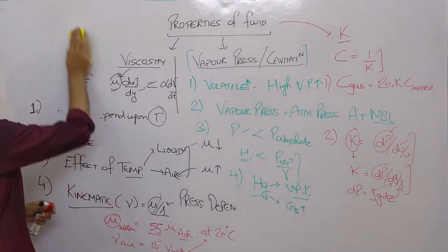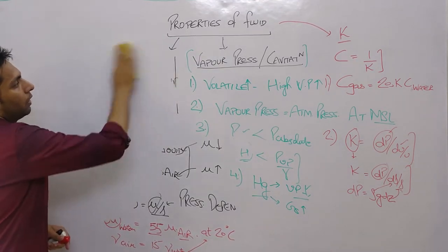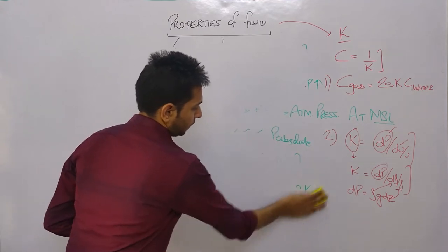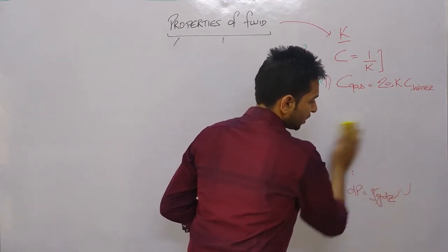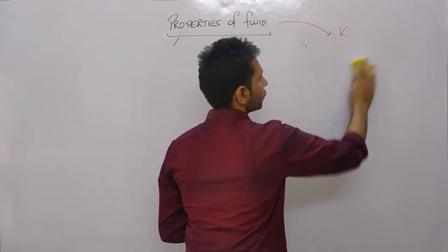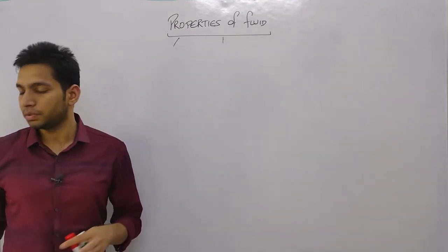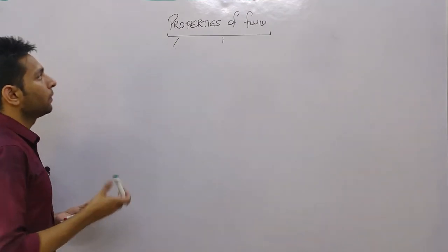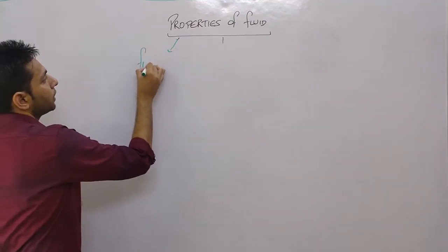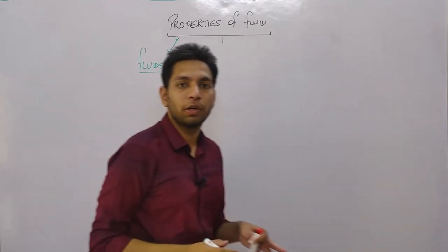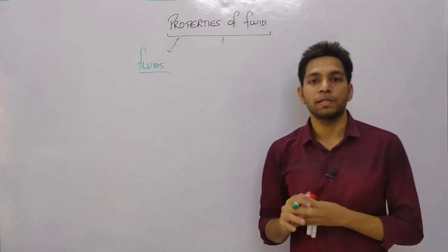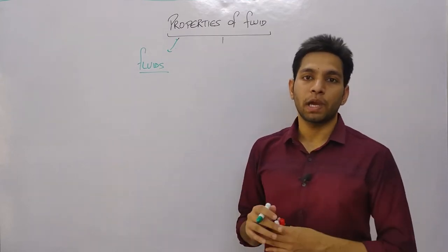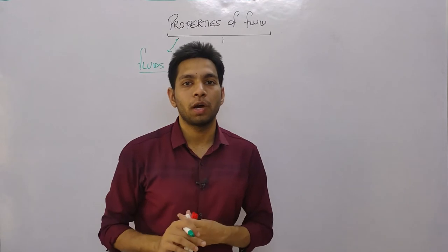We will see the classification of Newtonian flow and non-Newtonian flow. These questions will be very helpful. Even if you have a brief overview, you can solve the questions. The first question is about ideal fluids and real fluids — what are the qualities of ideal fluids, for example their surface tension value, compressibility value, or viscosity value.